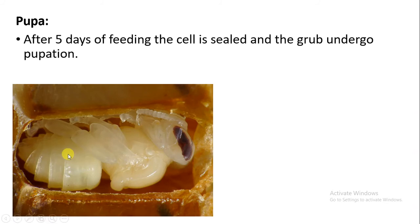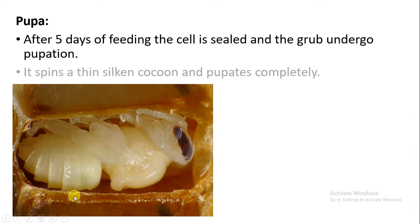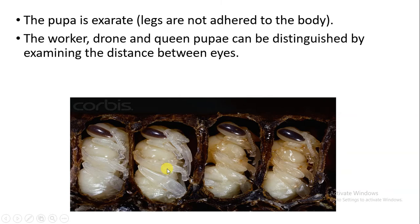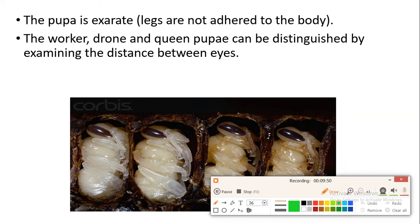After five days of feeding, the cell is sealed and the larva undergoes pupation — the pupal stage. The pupa spins a thin silk cocoon. The pupa is called 'exarate,' meaning the legs are not adhered or attached to the body. We can distinguish between worker, drone, and queen pupal stages by looking at the distance between the eyes in the head region.